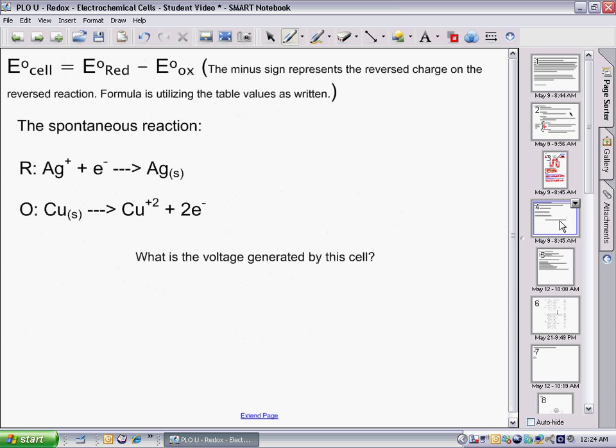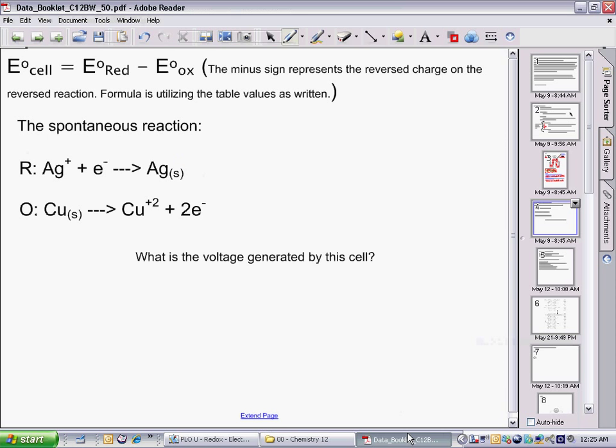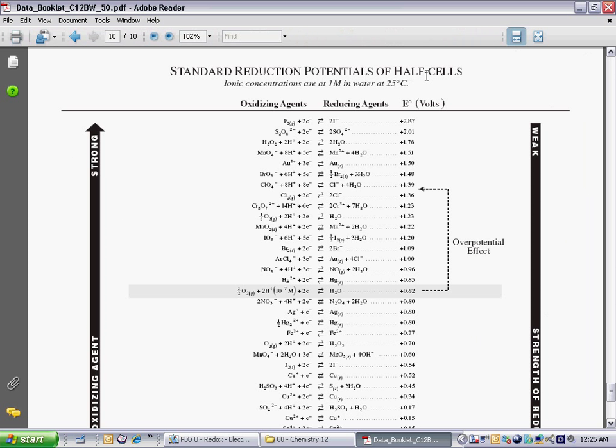Now, to more formally calculate the potential of the cell from what we did yesterday, we have a reduction from silver and our oxidation of copper. In order to determine the voltage, we have a reduction here. Silver + electrons goes to silver solid. Go to our standard reduction potentials of half cells and find that reaction.